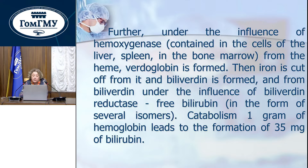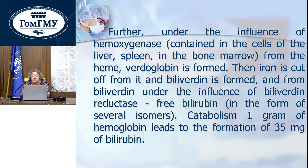Under the influence of heme oxygenase, contained in the cells of the liver, spleen, and bone marrow, from the heme the globin is separated. Then iron is cleaved from it and bilirubin is formed. From bilirubin, under the influence of bilirubin reductase, Z-bilirubin appears in the form of several isomers.